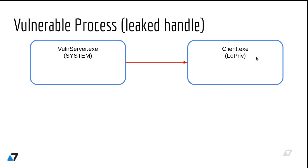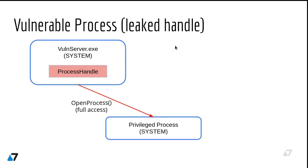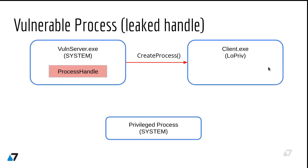If you have landed into such a process with low privileges, and if the server is badly written and leaks some sensitive handles, you might use that to your advantage. During runtime, our server opens a handle to a privileged process with full access and uses this handle for something. Then the client connects and a new process is spawned — the server calls CreateProcess and a new process is created with low privileges.